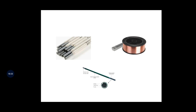Non-consumable electrodes — such as tungsten and graphite — will not be consumed at all and can be used for any number of components. This completes the arc welding process and the different electrodes used in arc welding. In the next class we will discuss tungsten inert gas welding and metal inert gas welding. Thank you for watching.